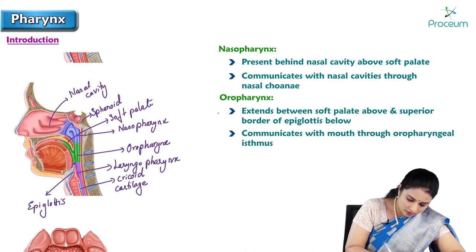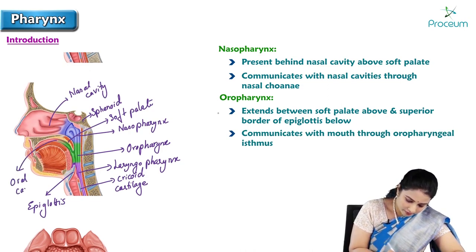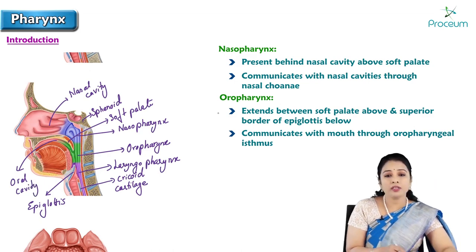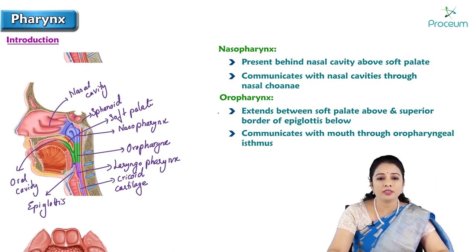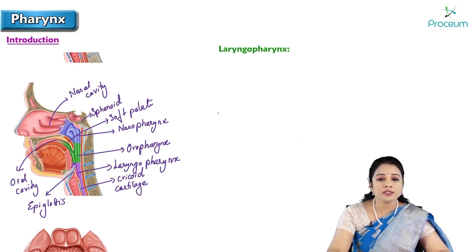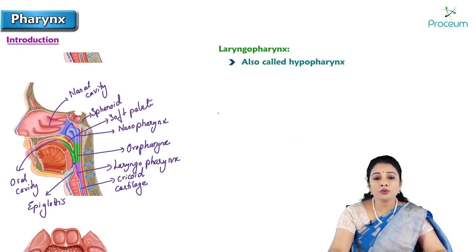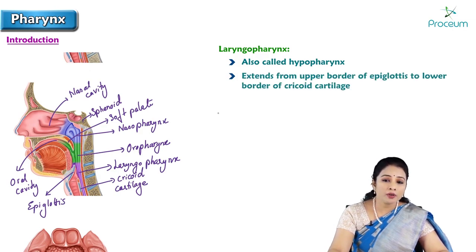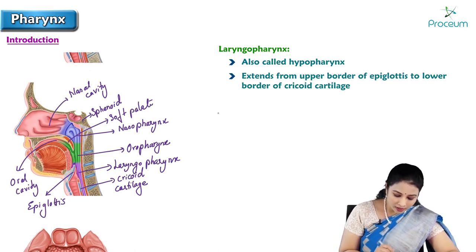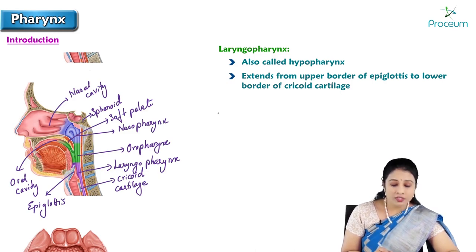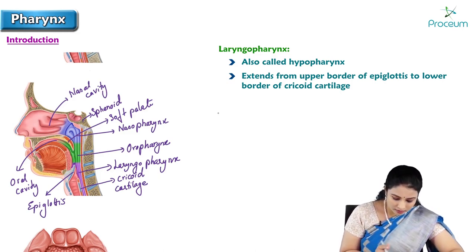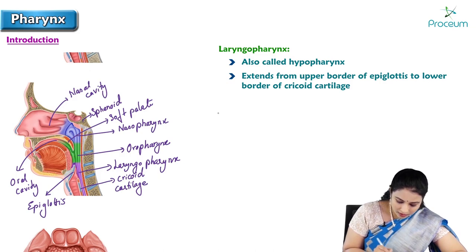Here is the tongue and oral cavity. It communicates with the oral cavity through the oropharyngeal isthmus. Laryngopharynx is also called hypopharynx, and extends from the upper border of the epiglottis till the lower border of the cricoid cartilage.